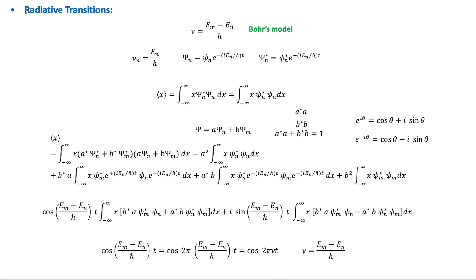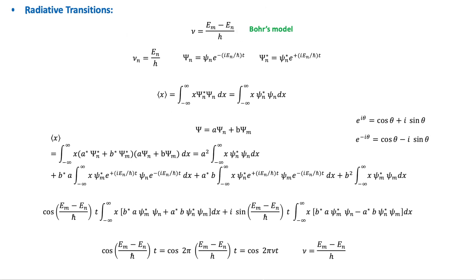This video is a brief description of radiative transitions in an atom, selection rules, and the normal Zeeman effect. In Bohr's theory, the frequency of the radiation emitted by an atom as it drops from an energy level Em to En is equal to Em minus En over H. We will now show that this equation arises naturally in quantum mechanics.